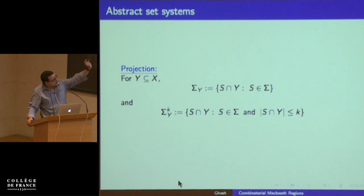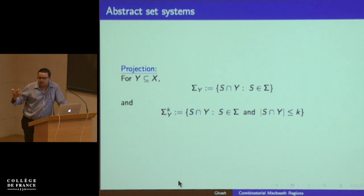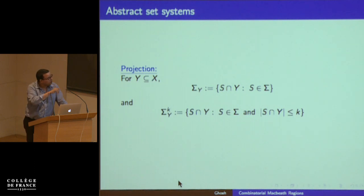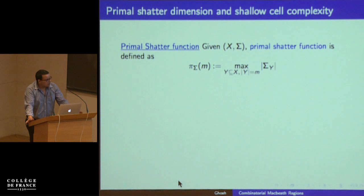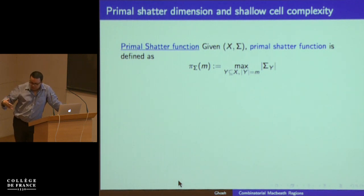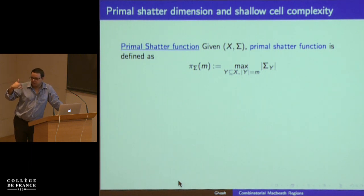Sometimes you are also interested in bounded size projections: intersections where the intersection size is less than or equal to K. This is crucial, and we denote it sigma_K(Y). With these definitions, you can define the primal shatter function for a set system: π(sigma, m) is the maximum number of projections you can get by projecting a subset Y of X of size m onto sigma.